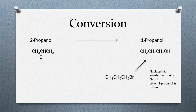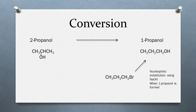If we need 1-bromopropane, we have to prepare it from 2-propanol, and we cannot do it in a single step. So what we normally do is convert 2-propanol to propene by dehydration, and then convert propene to 1-bromopropane using anti-Markovnikov addition or the peroxide effect.